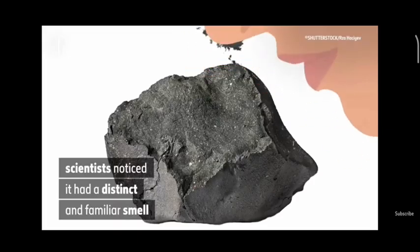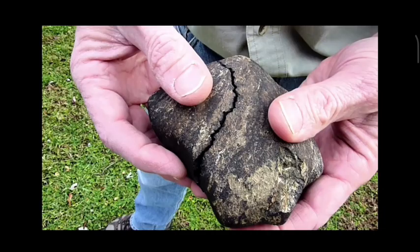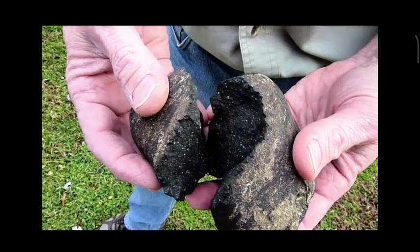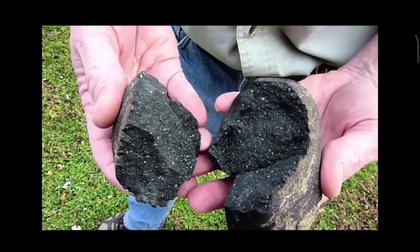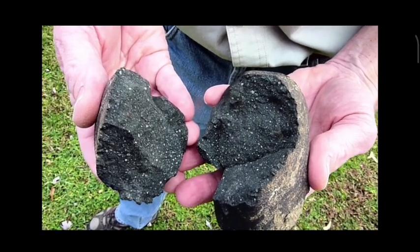The organic compounds in CM chondrites have a unique earthy scent that is frequently likened to the aroma of cooked Brussels sprouts, tar, wet hay, or the contents of a vacuum cleaner bag.